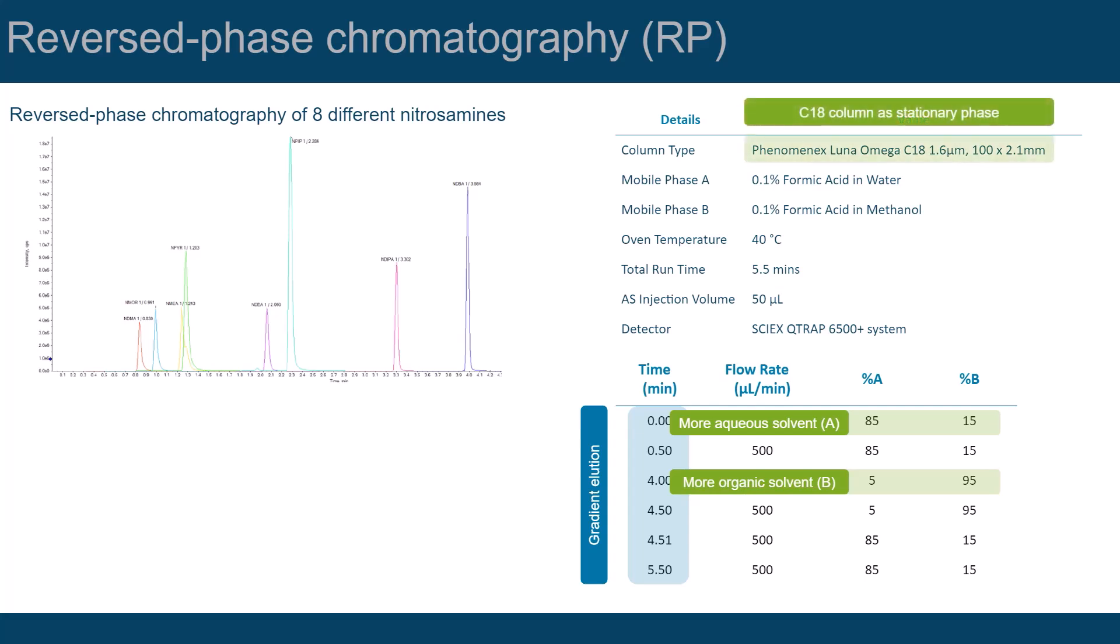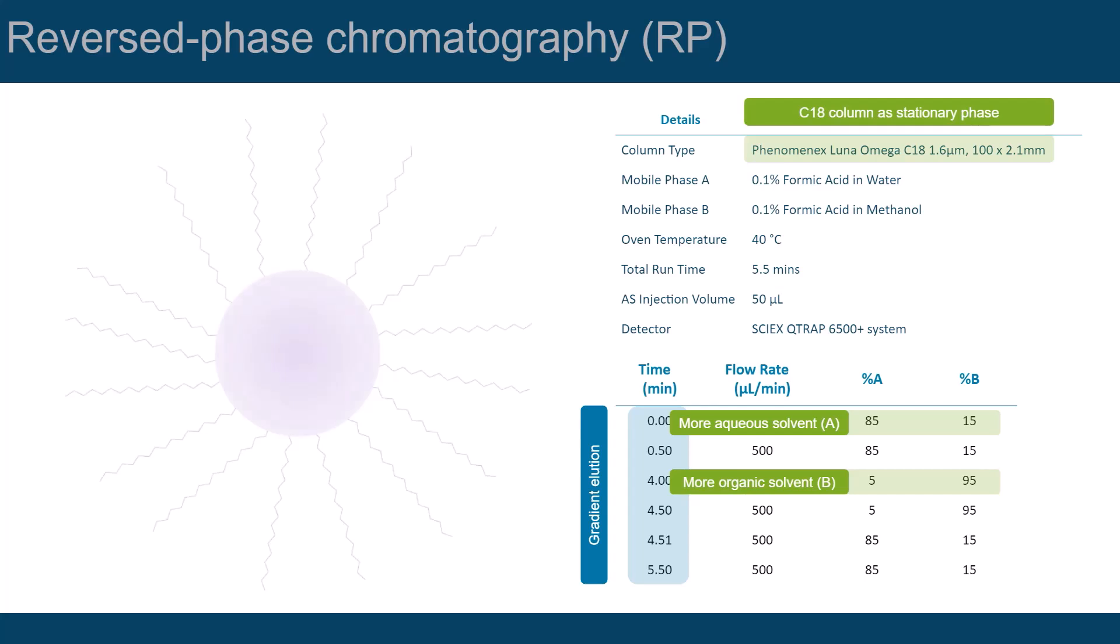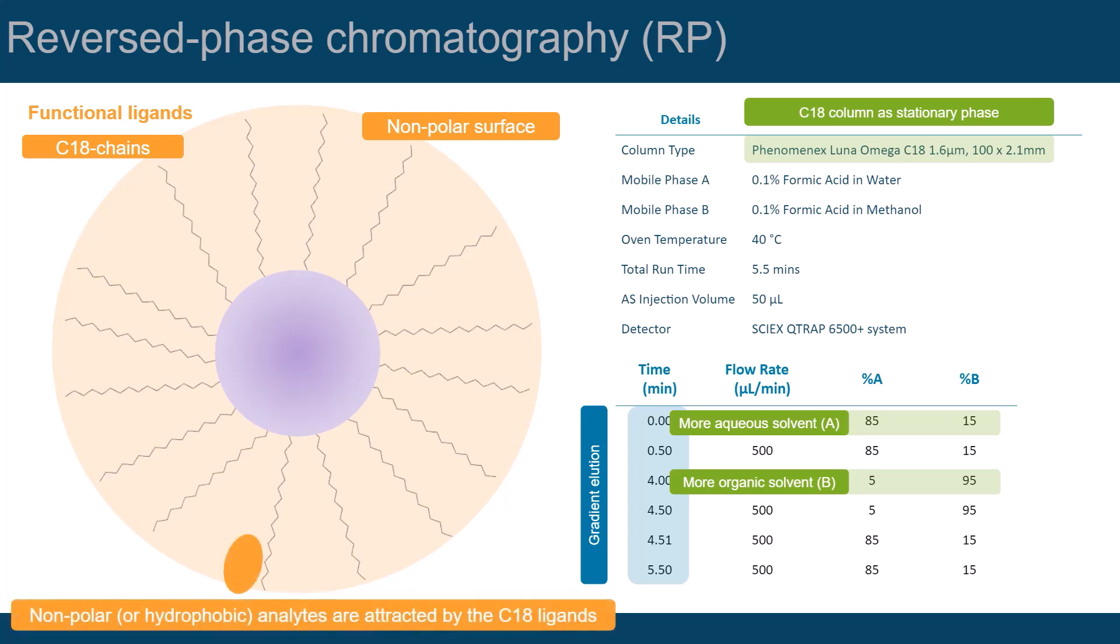C18 refers to the stationary phase and means that the surface of its particles is modified with functional ligands consisting of a hydrocarbon chain of 18 carbon atoms. This makes the particle surface non-polar and other non-polar molecules are attracted to it. C18 columns are a classic version of stationary phases used in reversed-phase chromatography.